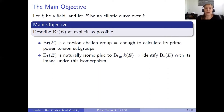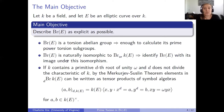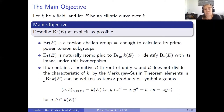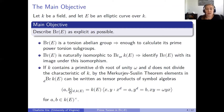A key tool is the Merkurjev-Suslin theorem, which connects the second Milnor K-group and the Brauer group. A consequence is: if k contains a primitive d-th root of unity ω and d does not divide the characteristic of k, then every element in the d-torsion of the Brauer group of k(E) can be written as a tensor product of symbol algebras. The symbol algebra (a, b) is the free algebra over k with generators x and y satisfying x^d = a, y^d = b, and yx = ωxy — a direct generalization of the quaternions.